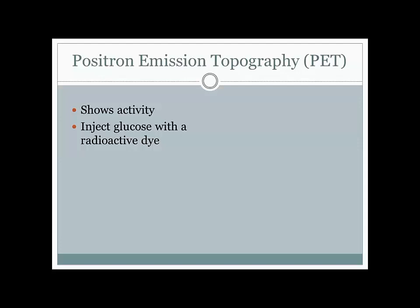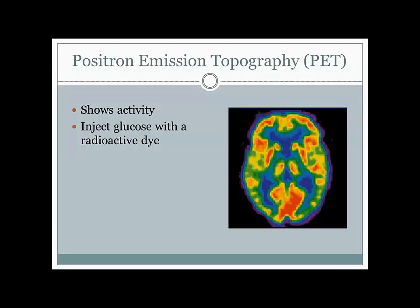The PET scan shows which part of the brain is more active compared to the rest. The colors follow the ROYGBIV spectrum—reds are the highest level of activity, followed by orange and yellow, then green, with blue, indigo, and violet being the least active portions. The outside appears purple or violet: that is the skull, where there is no activity and no glucose being used.